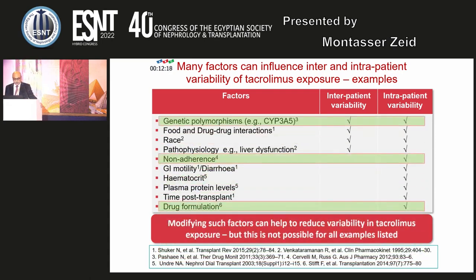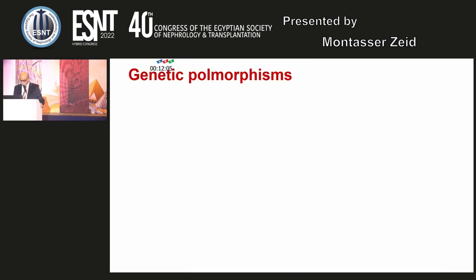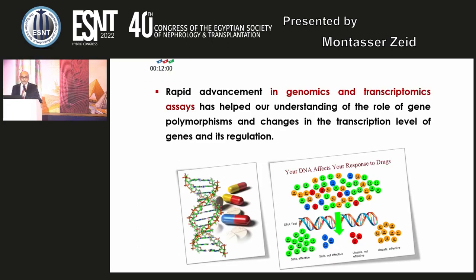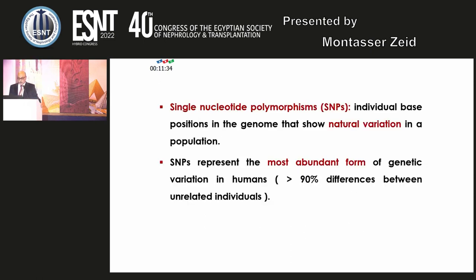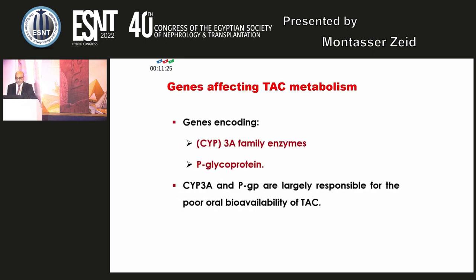I will discuss some of these factors for inter- and intrapatient variability: genetic polymorphism, non-adherence, and different drug formulations. Rapid advancement in genomics and transcriptomics assays has helped our understanding of gene polymorphism and pharmacogenomics optimization of drug therapy on the basis of each patient's genetic constitution. The single nucleotide polymorphism is the individual-based position in the genome that shows natural variation in a population. The genes affecting tacrolimus metabolism are the cytochrome P3A family enzymes and P-glycoprotein, all responsible for the poor oral bioavailability of tacrolimus.